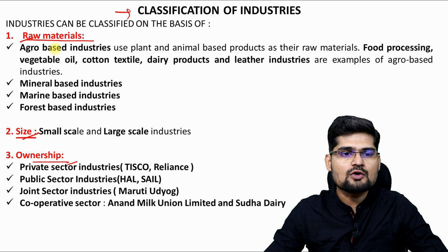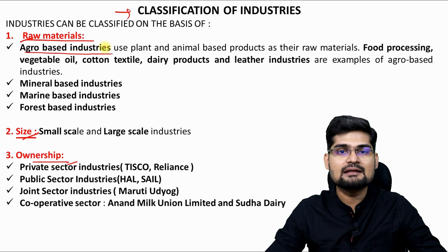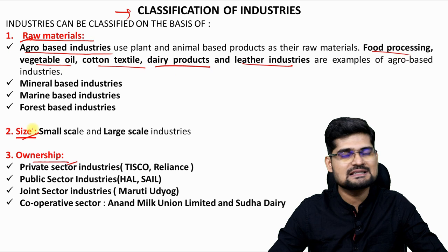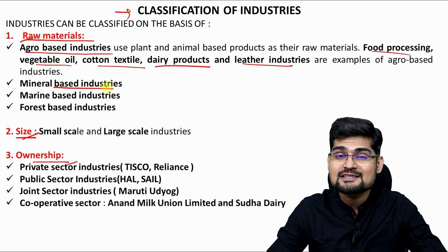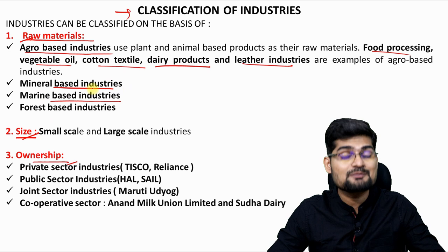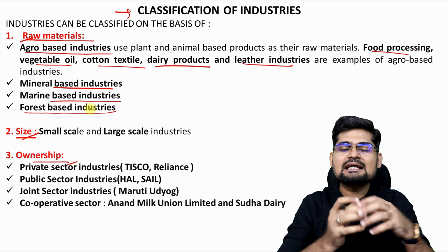Based on raw material, we have agro-based industries — for example, vegetable oil, cotton textile, dairy products, leather industries and food processing industries which take raw materials and process them into finished goods. Then we have mineral-based industries, where minerals are processed into different objects. There are also marine-based industries, where marine resources are processed, and forest-based industries.